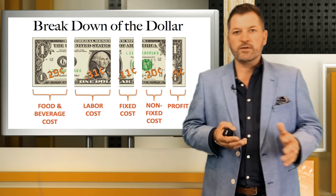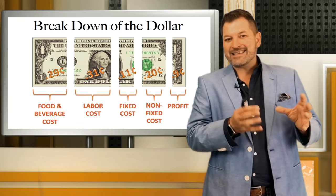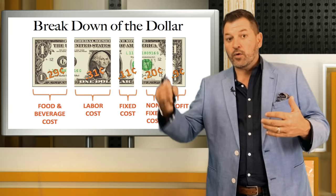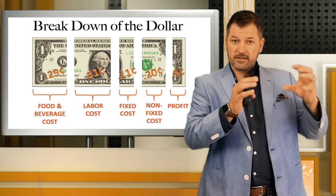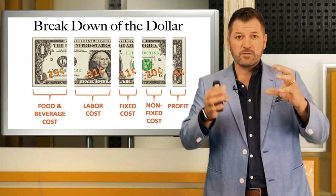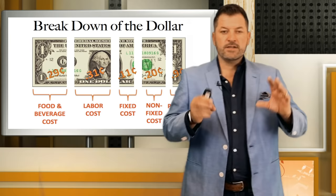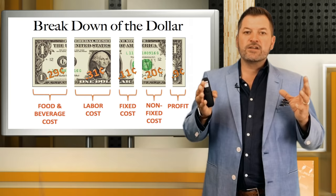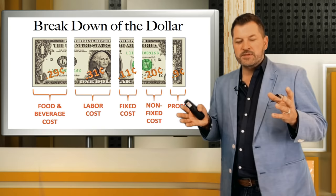Think about your to-go containers — that's a great example of a non-food item we can't necessarily build into a recipe cost, because we don't know if every customer took their food to go or ate it there. There are all kinds of non-food category items we put in a separate bucket. We focus on food cost because this is what we can impact, measure, contain, control, and manage.